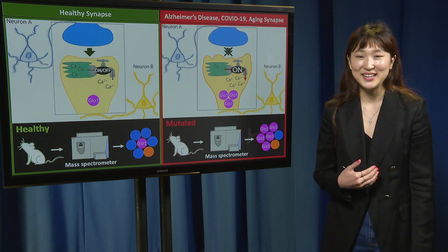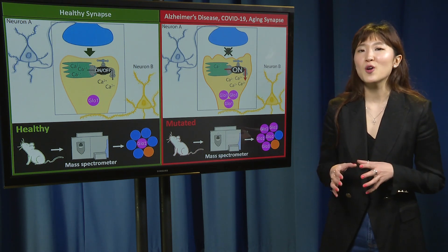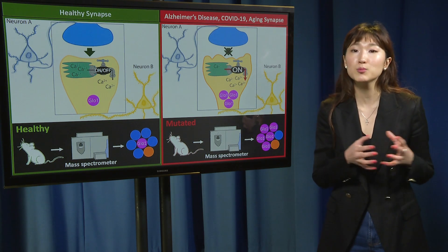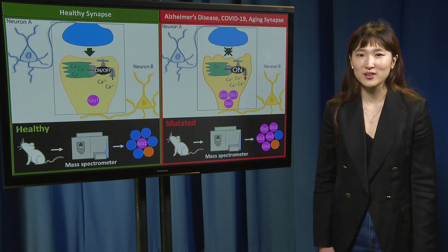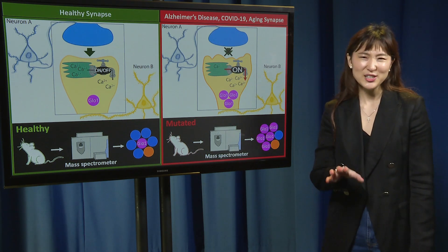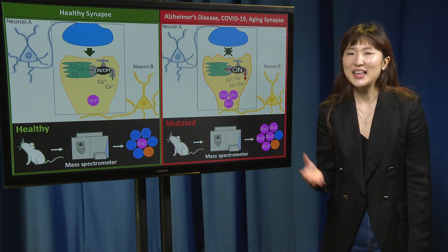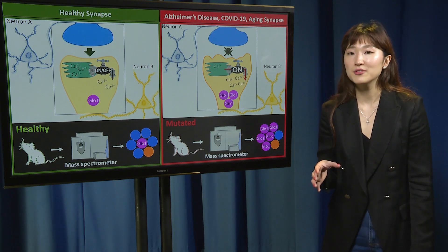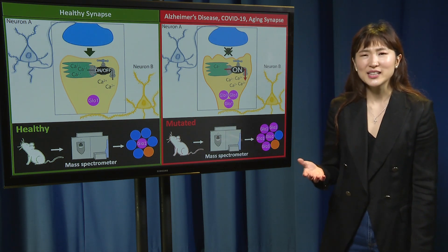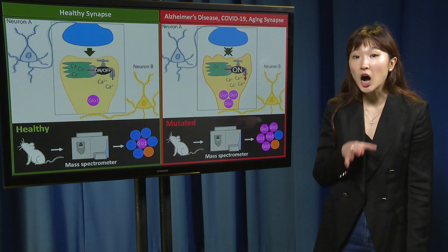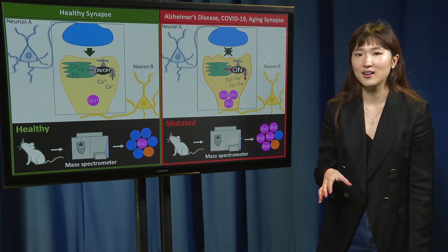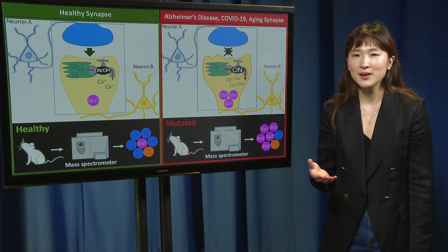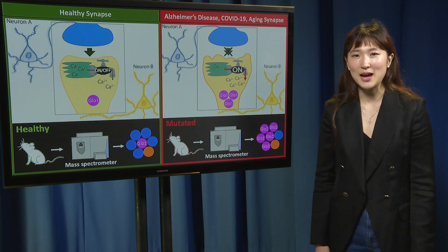That's where I come in. My work focuses on a specific receptor that controls calcium release from calcium stores. Imagine the receptor as a faucet. In the healthy synapse, the faucet can turn on and off. In Alzheimer's disease, this faucet is constantly on, leading to increased levels of calcium. But what does this mean for the synapse?